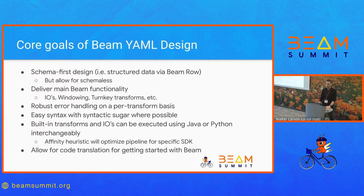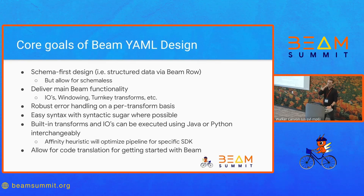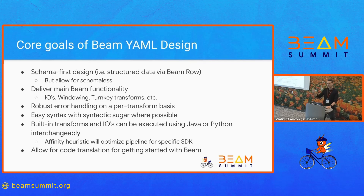Some of the goals of Beam YAML's design: it is a schema-first design — essentially, if you've heard of the Beam row, it's a way to structure your data that models a JDBC database row or an Excel spreadsheet row. We do want to allow for schema-less transforms as well. We want to deliver the main Beam functionality — IOs already built in Beam, windowing, turnkey transforms. We want robust error handling on a per-transform basis, easy syntax with syntactic sugar, and built-in transforms including major ones from Beam and some specialized ones just for Beam YAML.